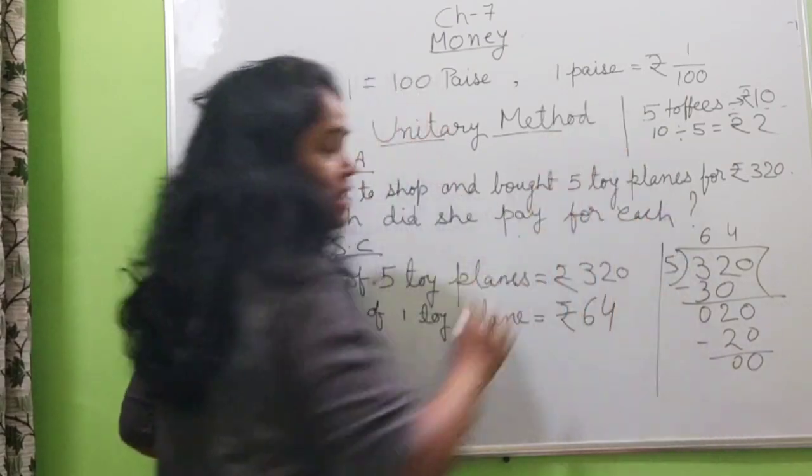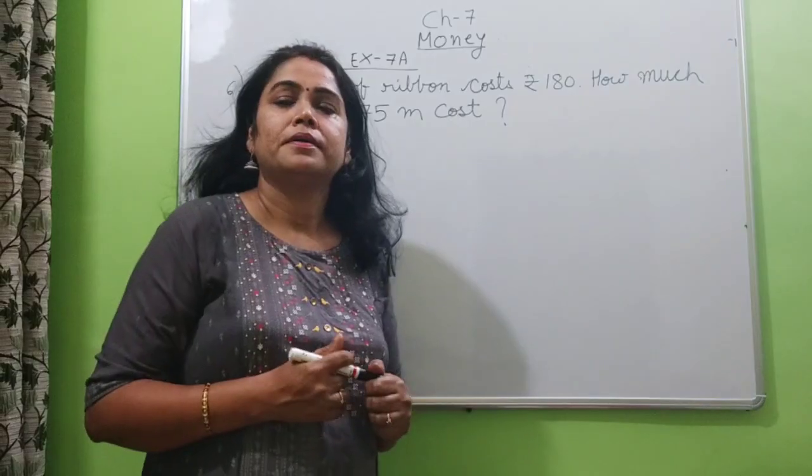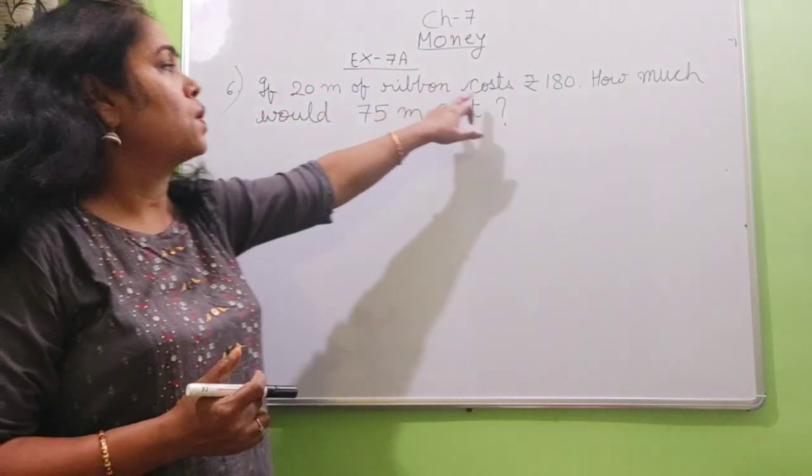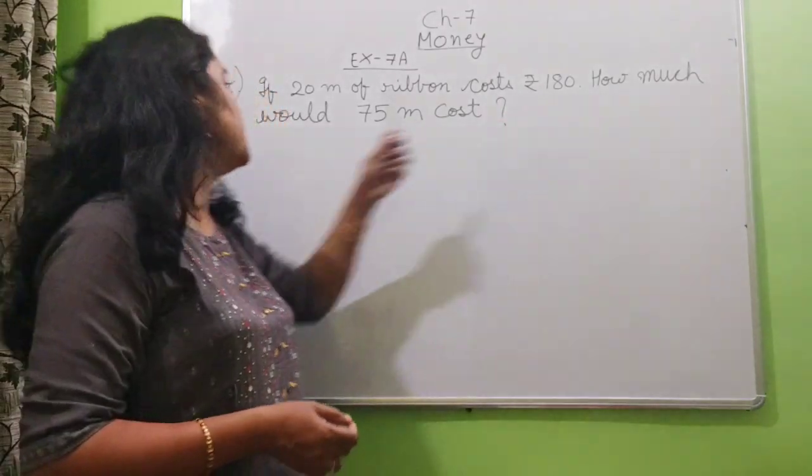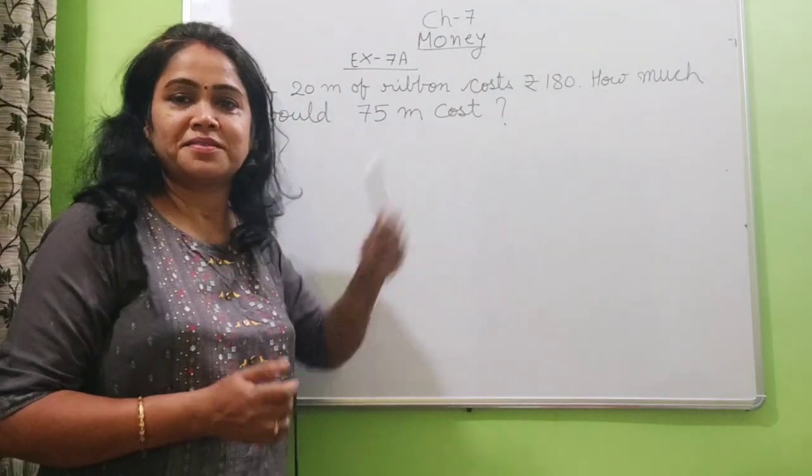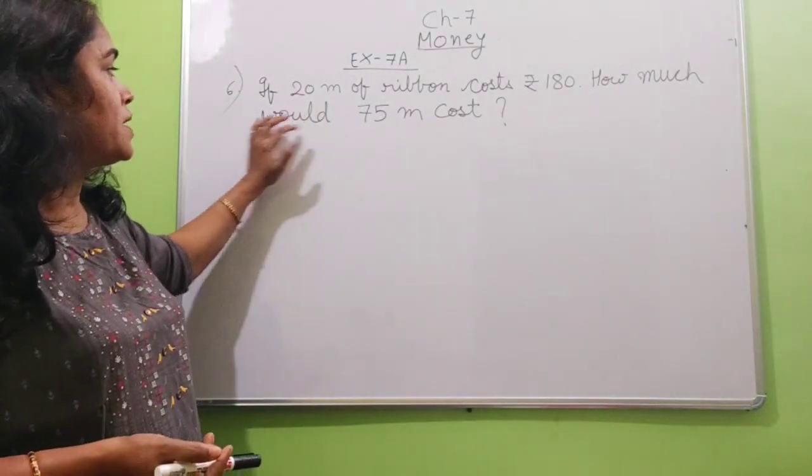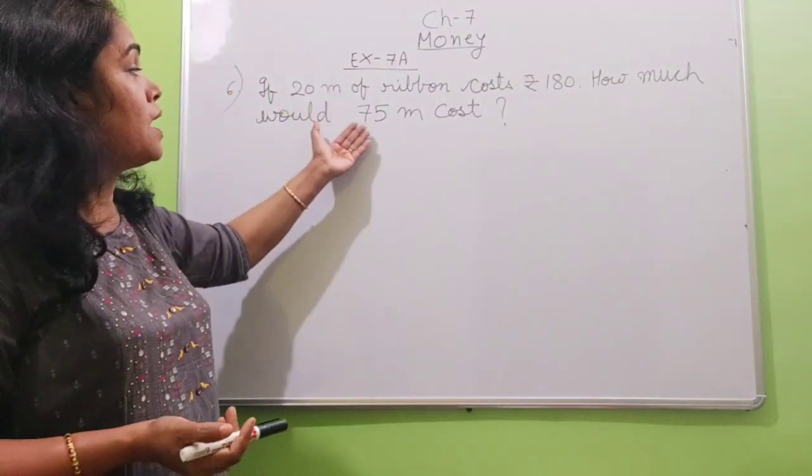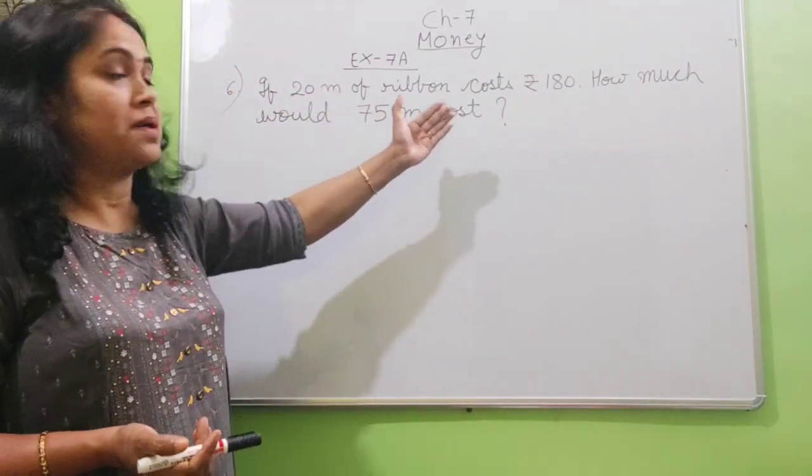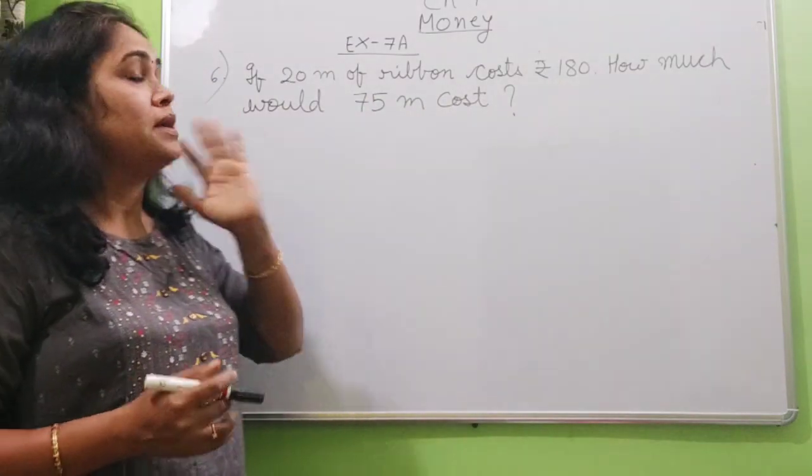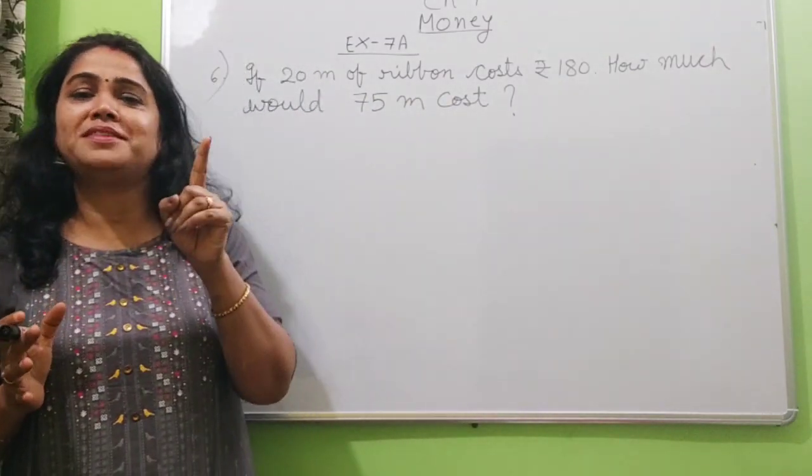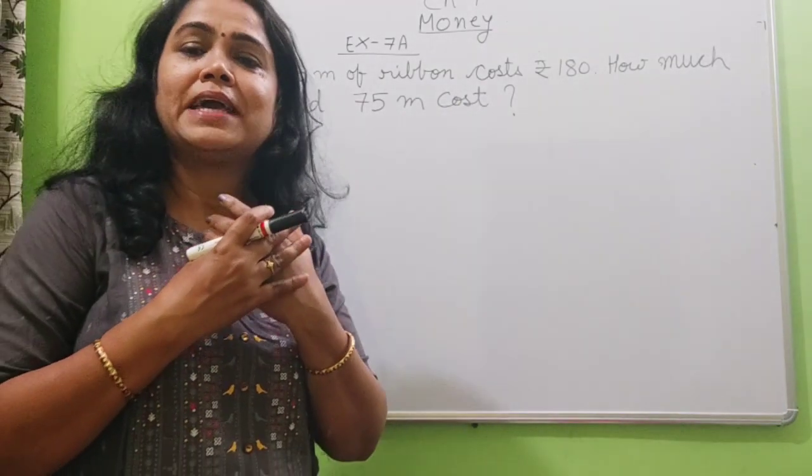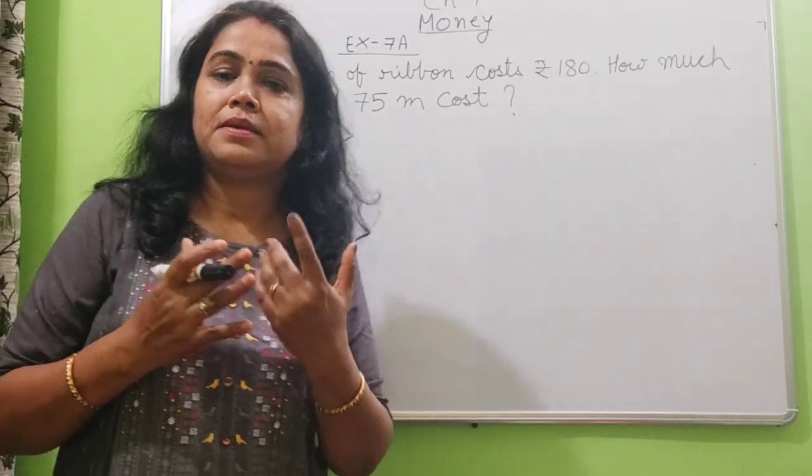One more question I will solve. Next question is, if 20 meter of ribbon cost rupees 180, how much would 75 meter cost? See here, it is not asking how much would 1 meter cost. It is asking how much 75 meter cost. In this question, the basic thing is that you have to remember unitary method and the most important thing that price of 1, if we know, we can find price of any number of article.